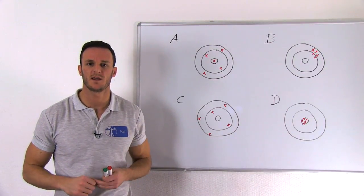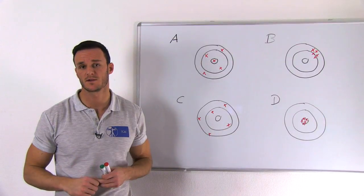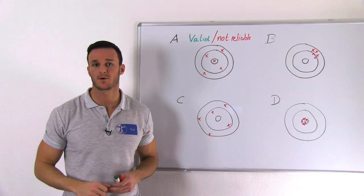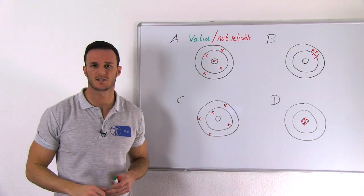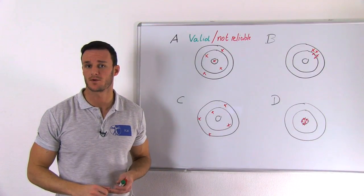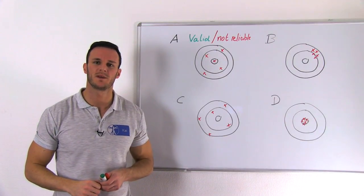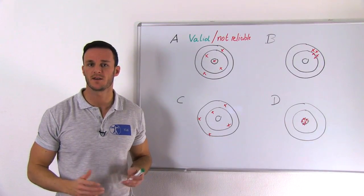In scenario B, we are precise or reliable because all of our shots land together, but we are not accurate because we didn't hit bullseye once. An example could be a scale that always measures five kilos too much. So our daily weighing would be pretty consistent but not accurately displaying our actual weight.